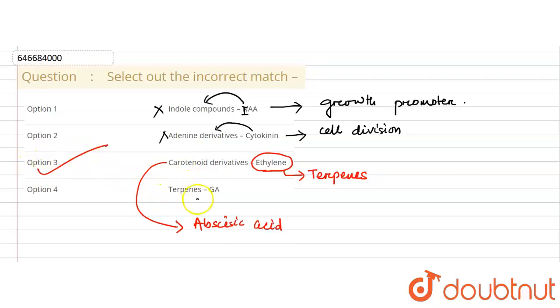If you look at the last option, terpene derivative is gibberellic acid. Again, gibberellic acid is also a terpene derivative, so it is a correct match. This is not the answer, so our answer remains option 3.